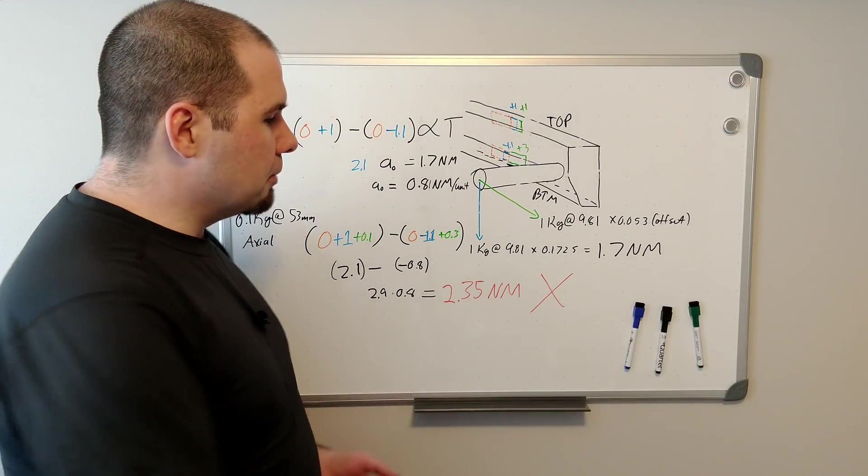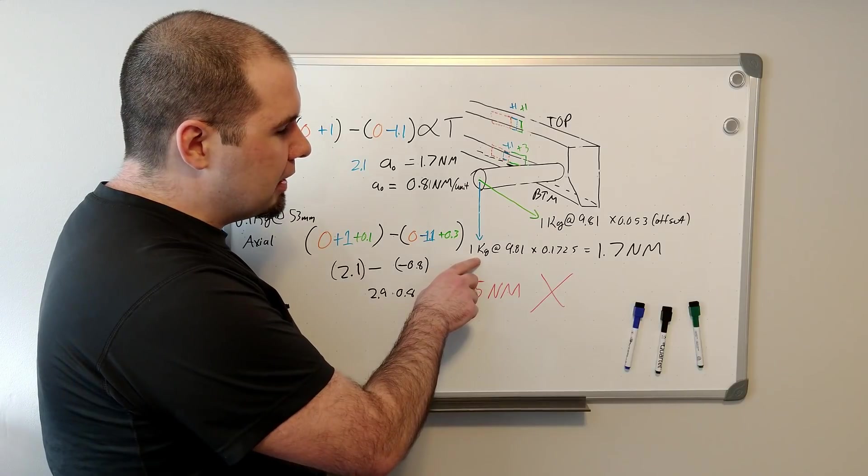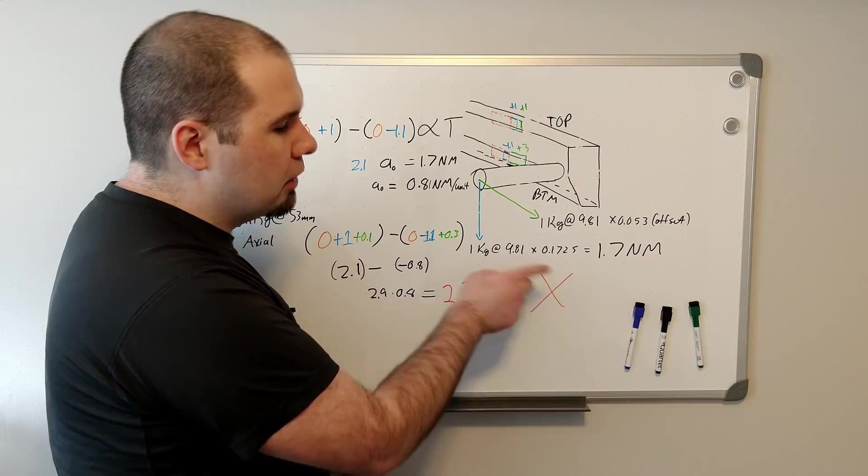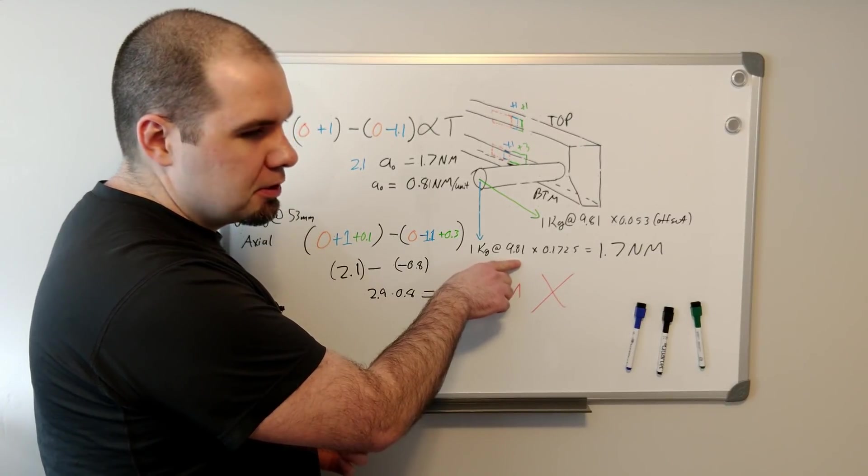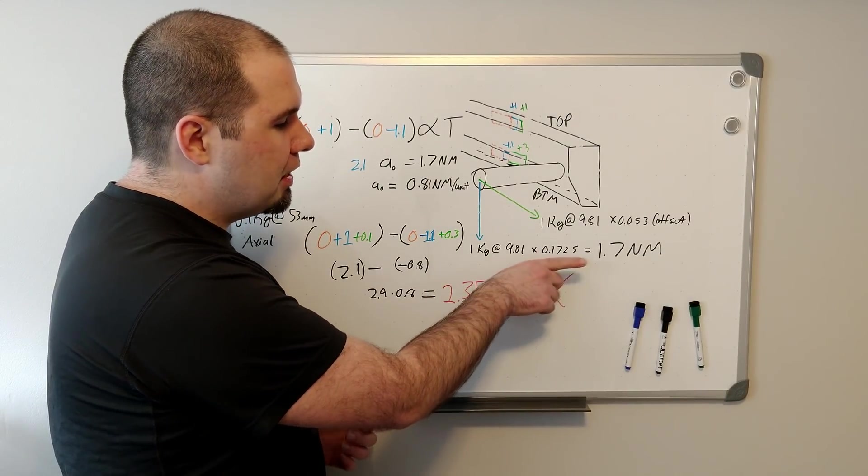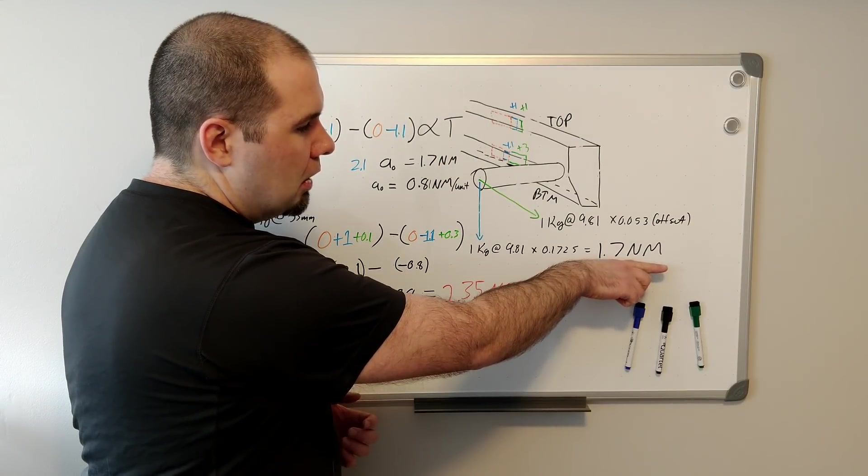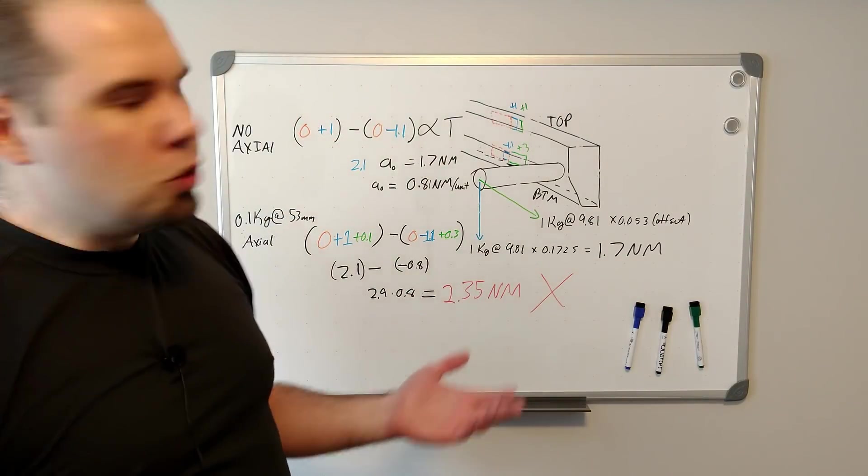So, in order to do a calibration, you might hang a weight when it's in the horizontal position, pure torque, 1 kilo, 9.81 meters per second squared for gravity, the crank arm length, and we know that we have 1.7 Newton meters of torque.